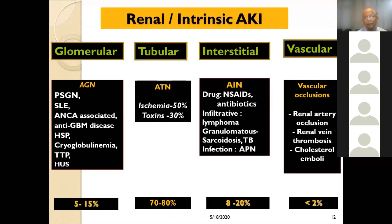In intrinsic or renal AKI, there may be glomerular, tubular, interstitial, or vascular causes. Acute glomerulonephritis accounts for 5 to 15% and may be due to SLE, anti-GBM diseases, or cryoglobulinemia, including post-infectious glomerulonephritis which is common in children. In acute tubular necrosis, ischemic causes account for 50% and toxins for 30%, making it the most important cause.